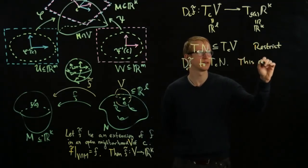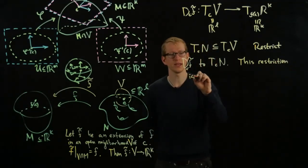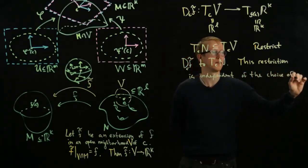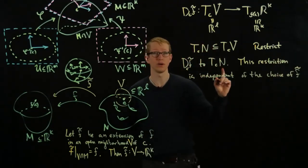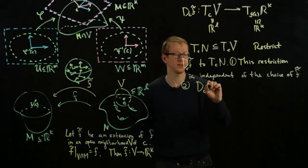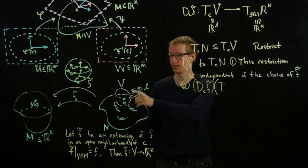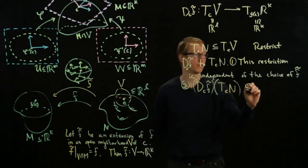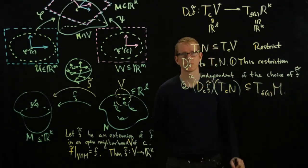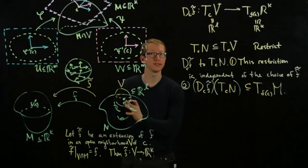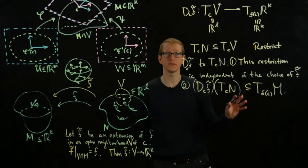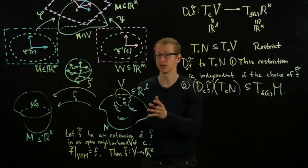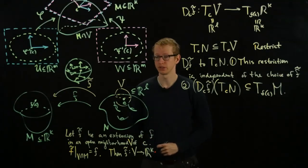This restriction is independent of the choice of the extension F tilde. That's one claim. And secondly, D_C F tilde, the image of the tangent space to the manifold at N, is contained in the tangent space of the manifold M at the point FC. So any such extension actually lands you in the tangent space of the manifold at that point as well. Both of these facts should surprise you considering the fact that we had absolutely no way of figuring out what the differential of a function of a differentiable function on an arbitrary domain in Euclidean space should be.